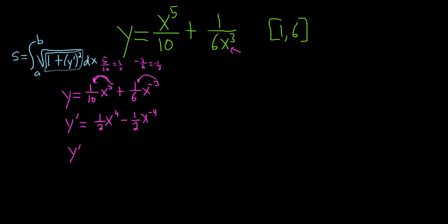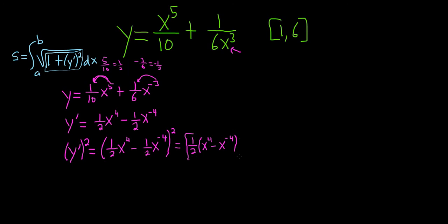Now we have to square it. So y prime squared equals 1/2 x to the fourth minus 1/2 x to the negative 4, all squared. It might be beneficial to first pull out the 1/2, giving us 1/2 times (x to the fourth minus x to the negative 4), all squared. This is the same as 1/4 times (x to the fourth minus x to the negative 4) squared. This makes expanding easier without the fractions.